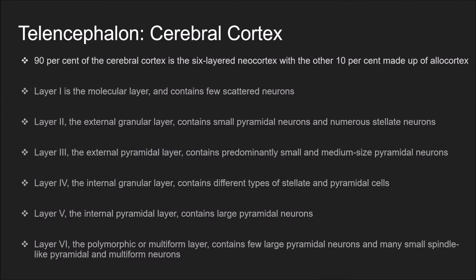Ninety percent of the cerebral cortex is a six-layered neocortex, with the other ten percent made up of allocortex. Layer one is the molecular layer and contains few scattered neurons. Layer two is the external granular layer and contains small pyramidal neurons and numerous stellate neurons. Layer three, the external pyramidal layer, contains predominantly small and medium-sized pyramidal neurons. Layer four, the internal granular layer, contains different types of stellate and pyramidal cells. Layer five, the internal pyramidal layer, contains large pyramidal neurons. Layer six, the polymorphic or multiform layer, contains few large pyramidal neurons and many small spindle-like pyramidal and multiform neurons.